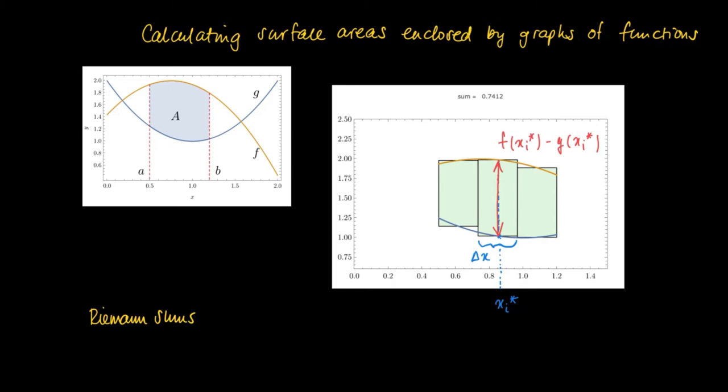So now we form sums, Riemann sums, and we may calculate the area spanned by the rectangles as f x i star minus g x i star times delta x. And delta x is the length of such an interval, and the height of each such rectangle is given by f x i star minus g x i star.